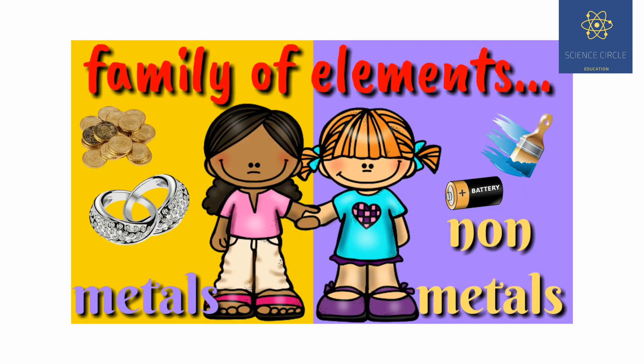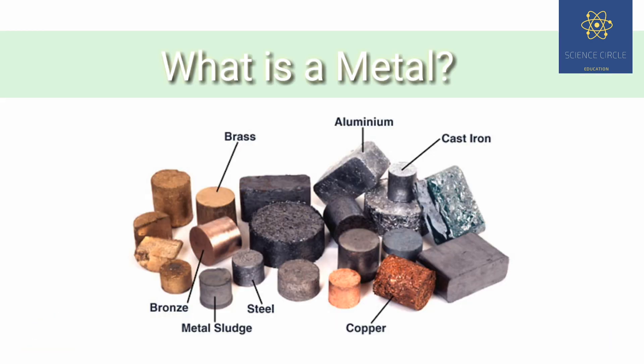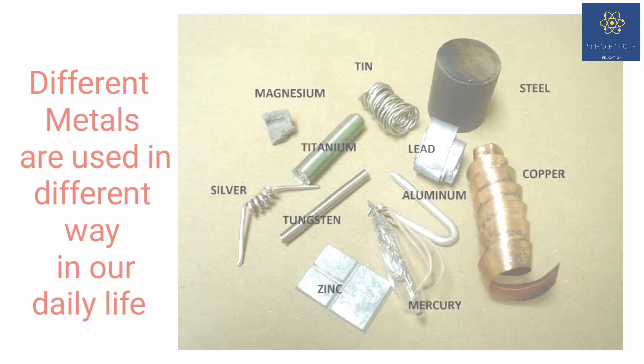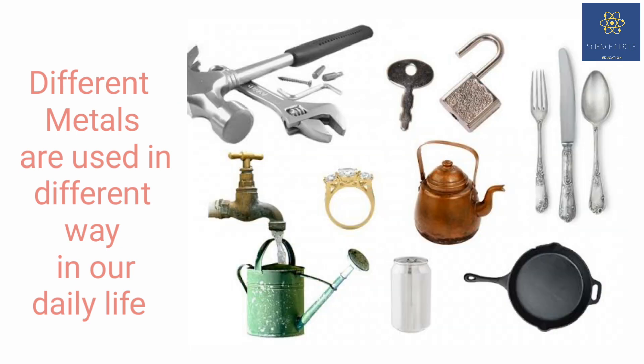Elements can be classified into metals and non-metals. Majority of the elements in the periodic table are metals. Most common examples of metals are gold, silver, platinum, iron, magnesium, manganese, and many more.